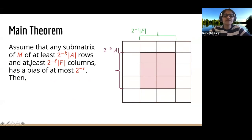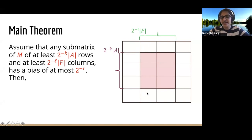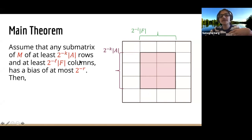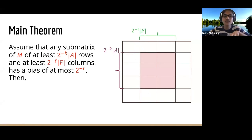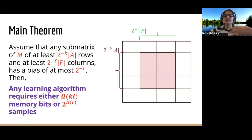We study a property of matrix M called the extractor property. For any submatrix of M with at least 2^{-k} fraction of rows and 2^{-L} fraction of columns, the average of the matrix entries in the submatrix has absolute value at most 2^{-R}. If matrix M satisfies this property, then any learning algorithm requires either Ω(KL) memory or 2^{Ω(R)} samples.